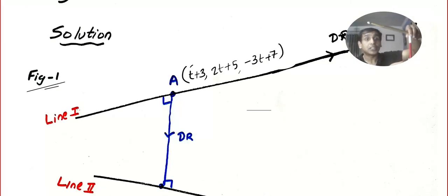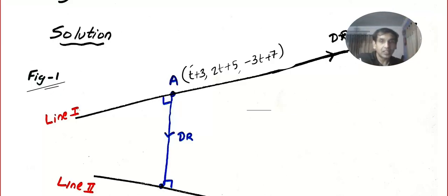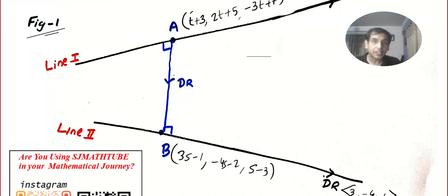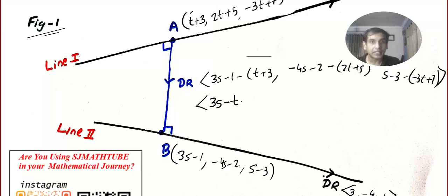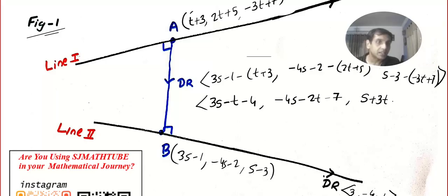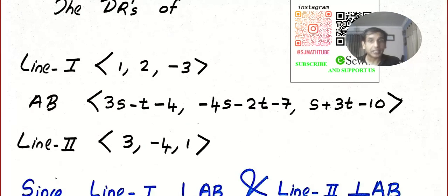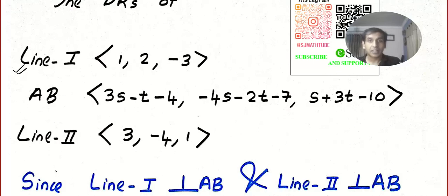I'm going to assume AB to be the shortest distance. These two segments are perpendicular to the respective lines. The direction ratio of AB is calculated as x₂ − x₁: so (3s − 1) − (t + 3), then (−4s − 2) − (2t + 5), and (s − 3) − (−3t + 7). This simplifies to (3s − t − 4), (−4s − 2t − 7), and (s + 3t − 10).